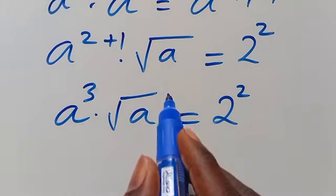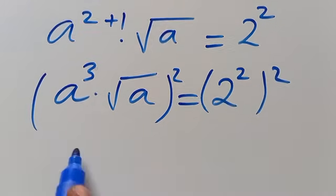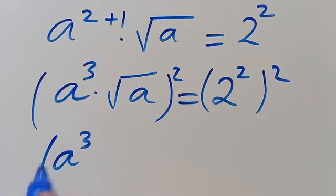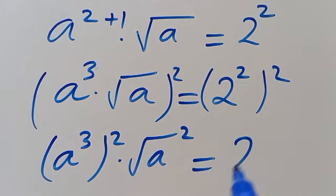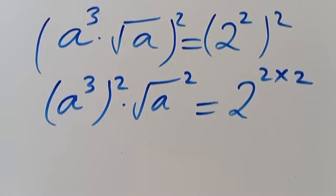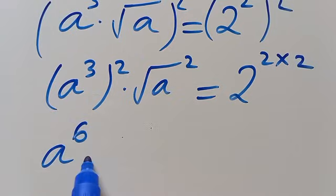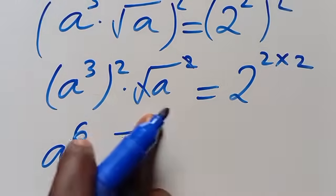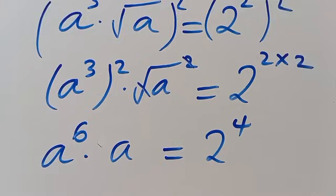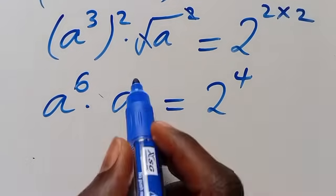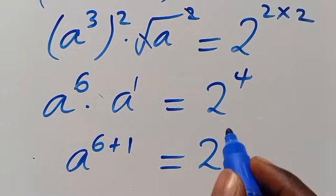To eliminate the root again, let's take the square of both sides. So here we will have A to the power of 3, in parentheses, to the power of 2, multiplied by root A to the power of 2, equals 2 to the power of 2 times 2. A to the power of 3 times 2 gives us 6; the root A squared cancels out. So here we also have A to the power of 6 plus 1, equals 2 to the power of 4.